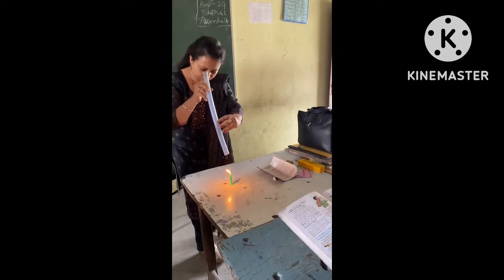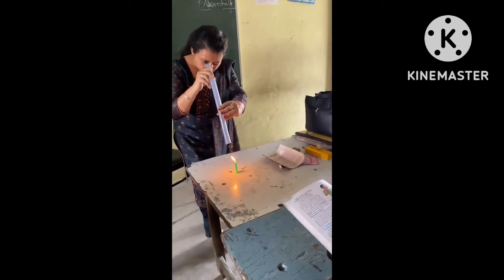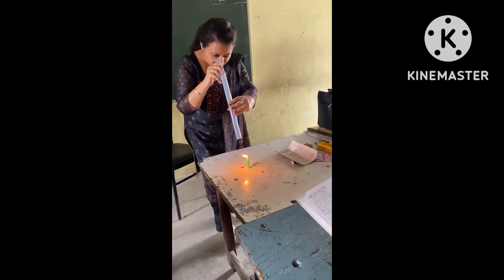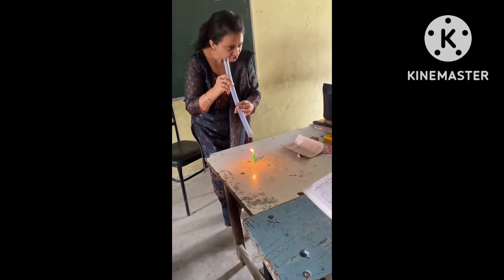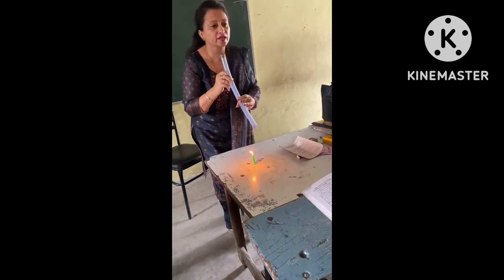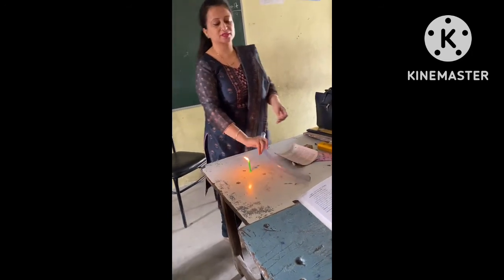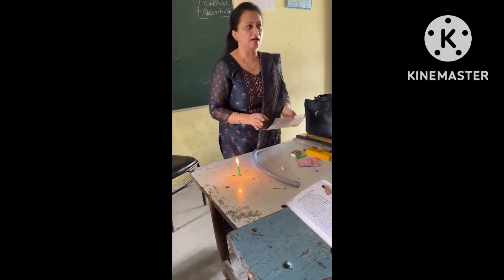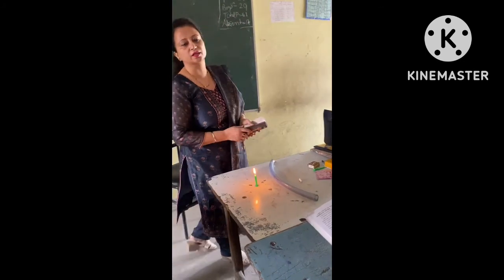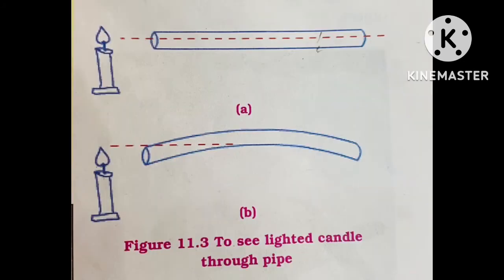Now try to look at the flame of the candle through this bent pipe. What you will observe is that you are not able to see the flame of the candle. The reason is that light rays coming towards our eyes through the pipe are stopped due to the bend. So we can conclude that light travels along a straight line. Thanks for watching.